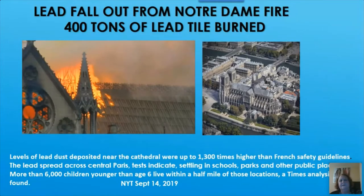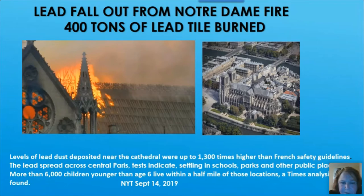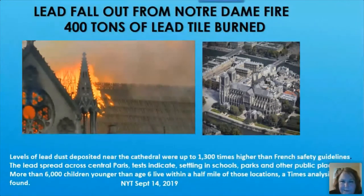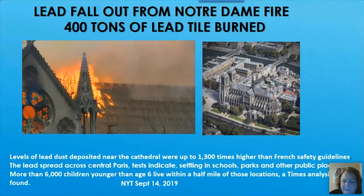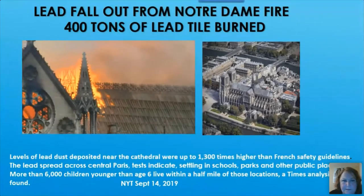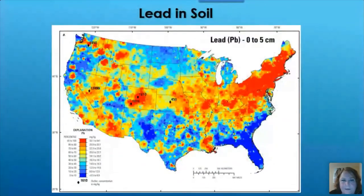Occasionally lead falls from unexpected sources. When Notre Dame Cathedral had its fire and the lead roof burned, 400 tons of lead rained down on Paris — 13 times higher than French safety guidelines within about a half-mile radius. More than 6,000 children younger than six lived within a half mile of that location, making it a significant environmental disaster from a lead-exposure standpoint.